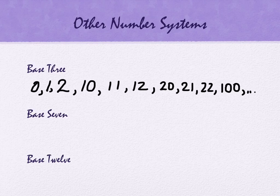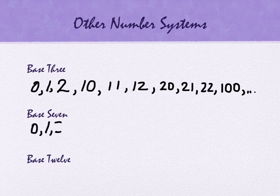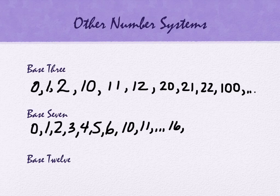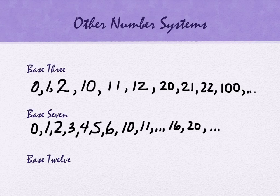Base 7: what are the digits in base 7? 0 through 6. What comes after 6? 1, 0. Then 1, 1 all the way up to 1, 6. Then it becomes 2, 0, and we keep going. What would the biggest two-digit number be in base 7? 6, 6. And after 6, 6 we would get 1, 0, 0.